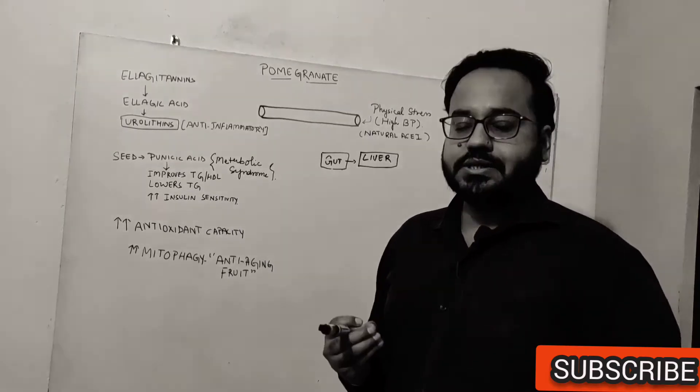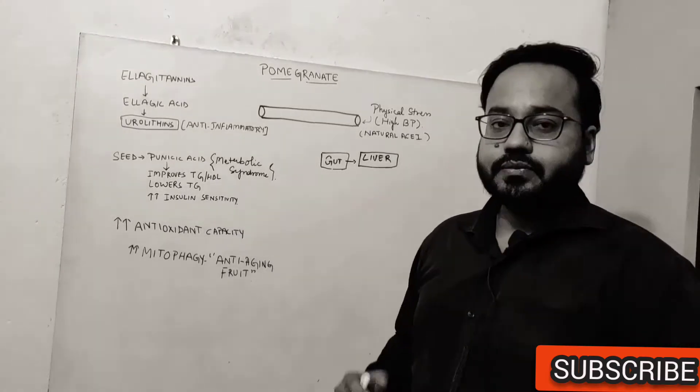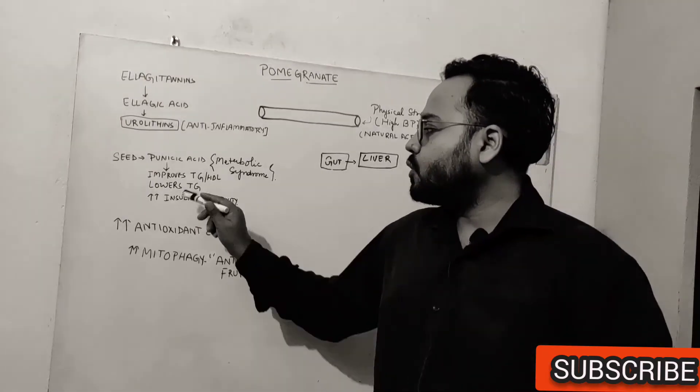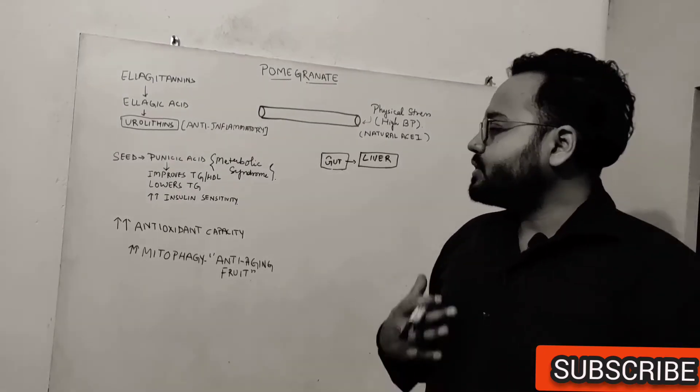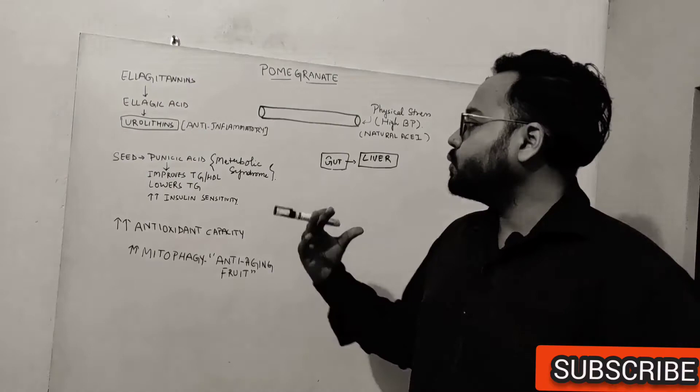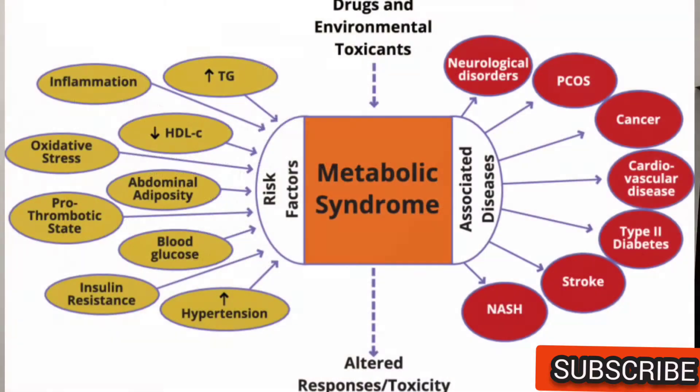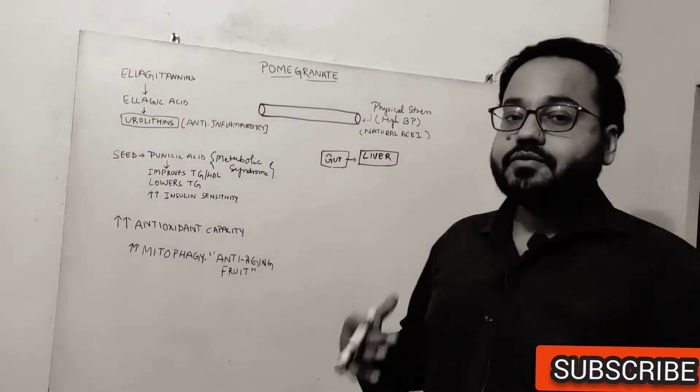Now punicic acid is very important to improve triglyceride to HDL ratio, and this has also been shown to lower your triglyceride and thereby significantly decrease your chances of heart diseases. Punicic acid is an excellent polyunsaturated fatty acid to combat metabolic syndrome. So by improving insulin sensitivity it will also help in combating metabolic syndrome, which is again one of the risk factors in the development of heart diseases.